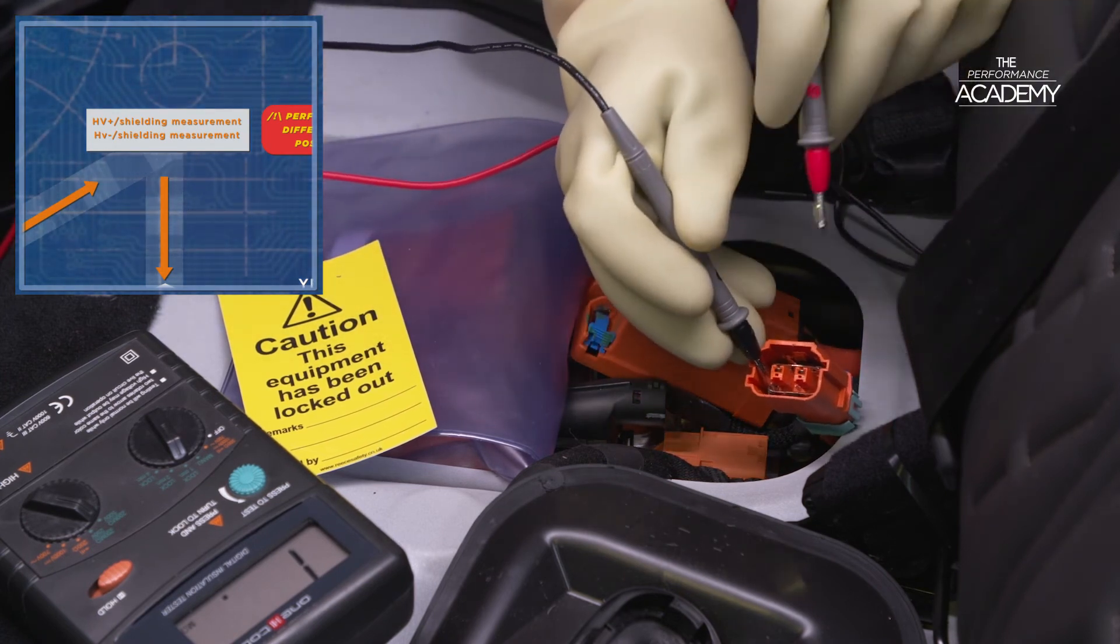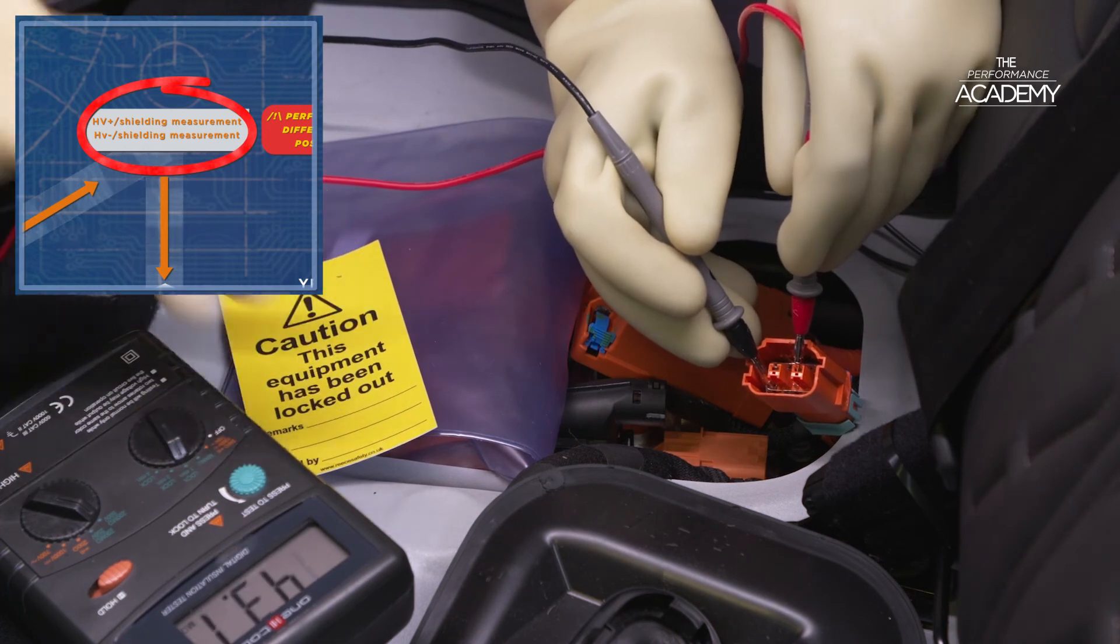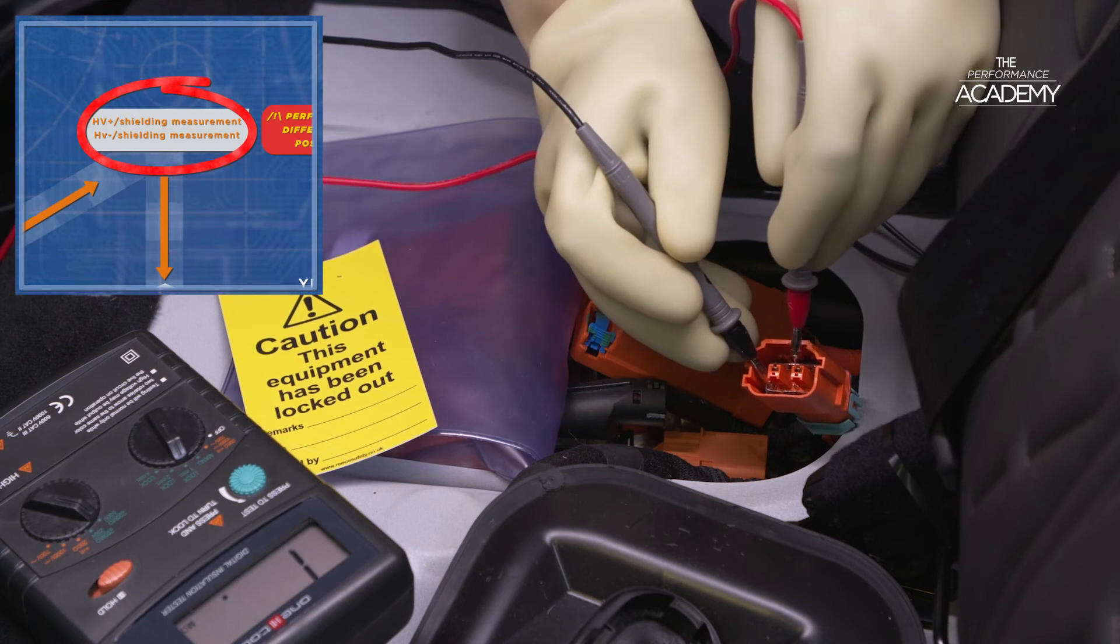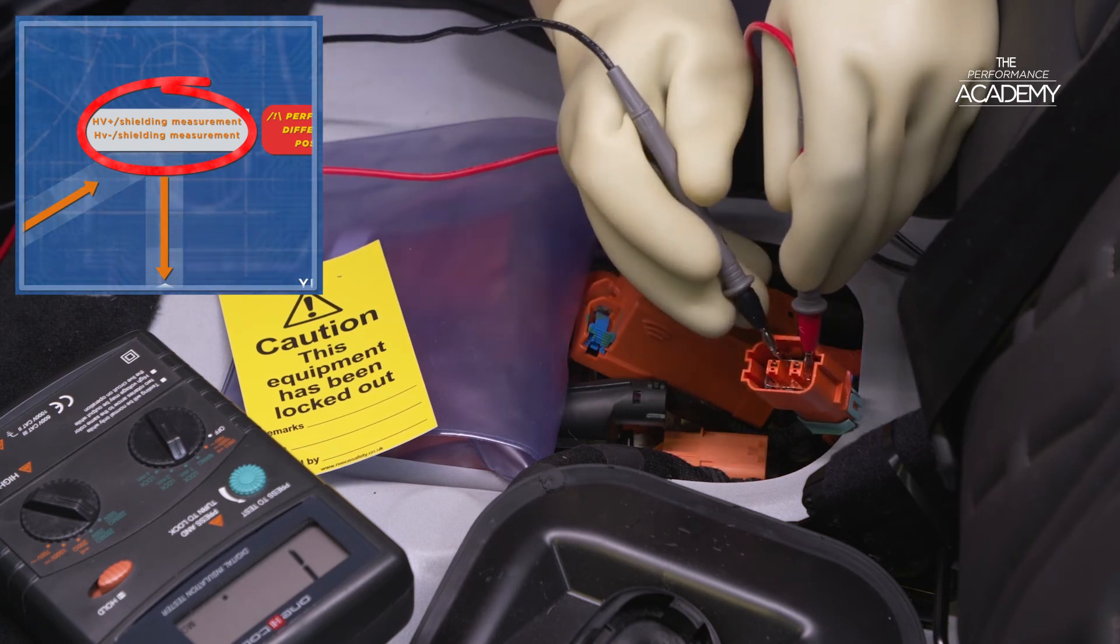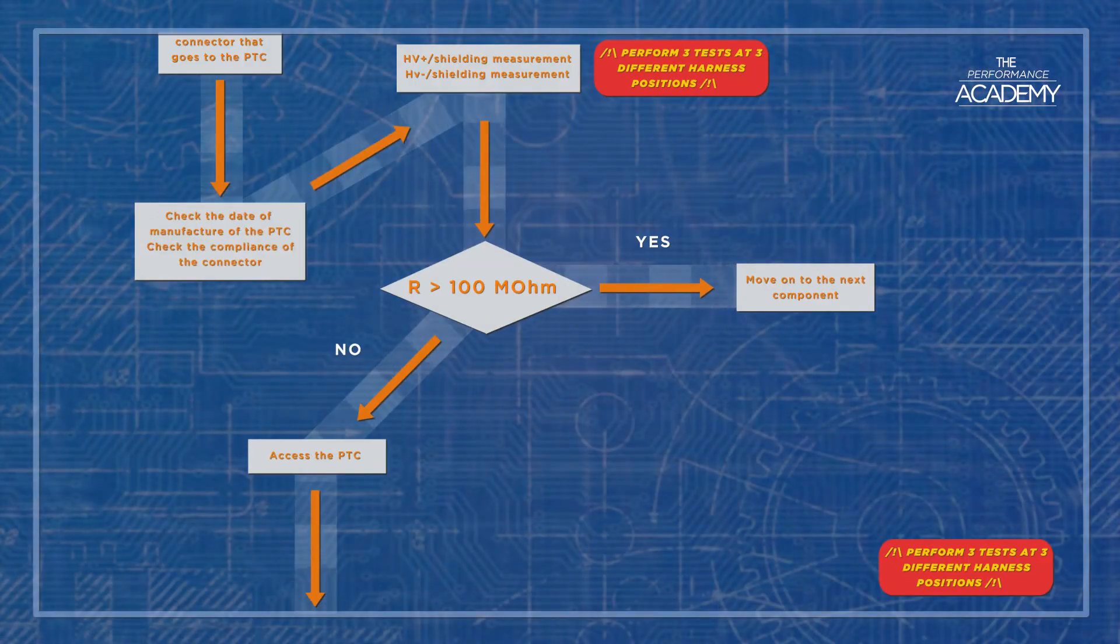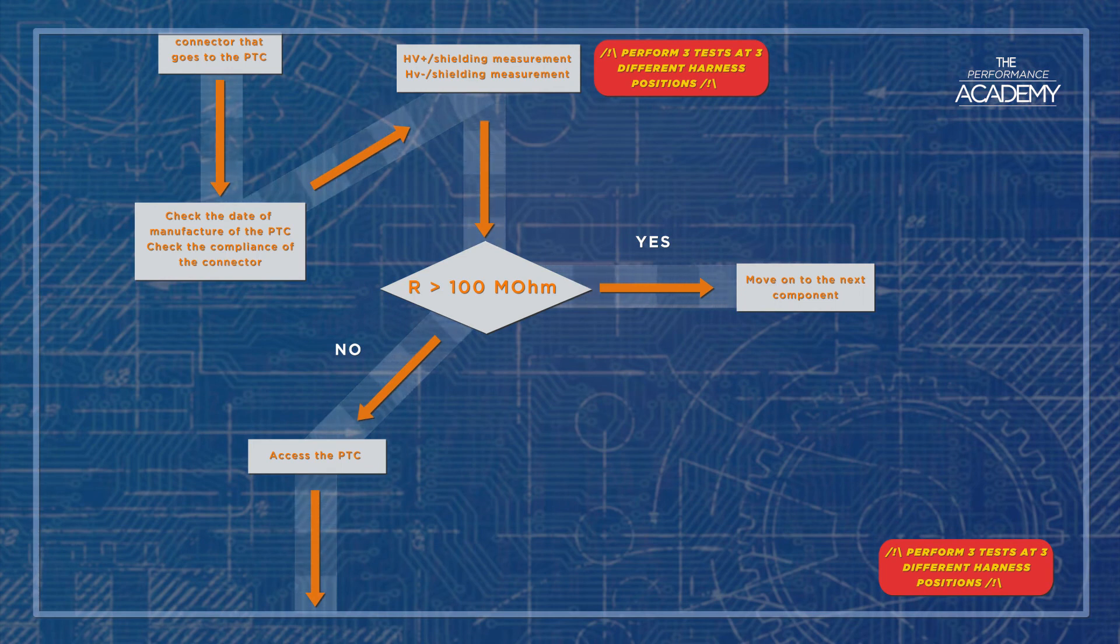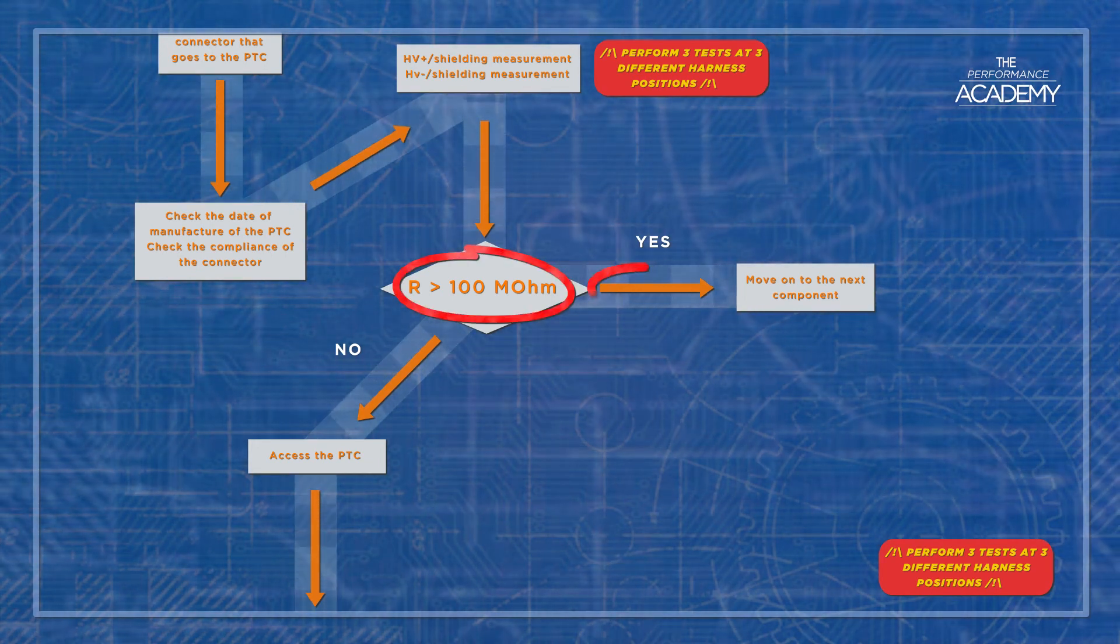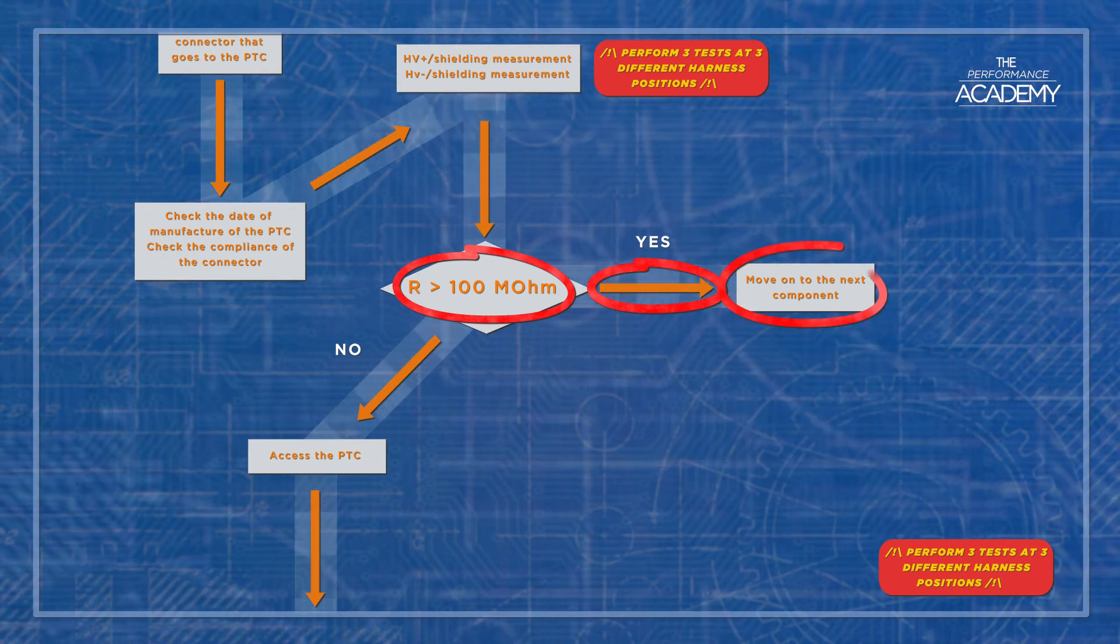High voltage plus to shielding measurement, followed by high voltage minus to shielding measurement. After recording the results, following the flow chart down to the either or results box, which states if R is greater than 100 mega ohms, result yes. Move on to check the next component. Result no, disconnect the high voltage cable connection at the PTC heater itself.